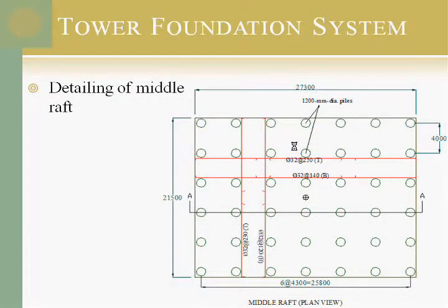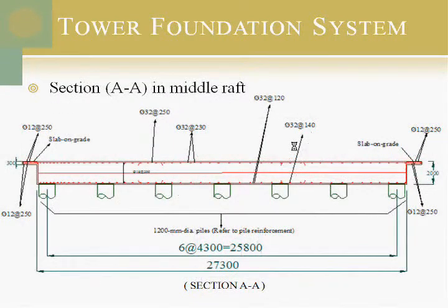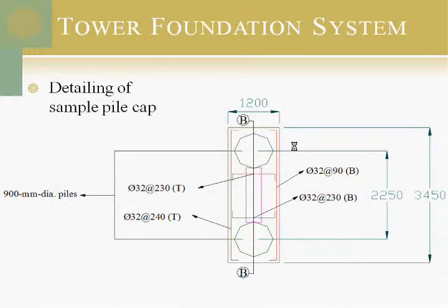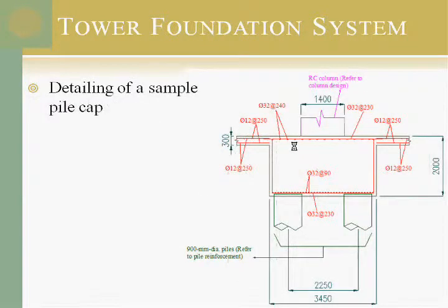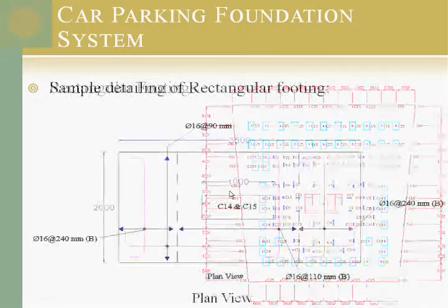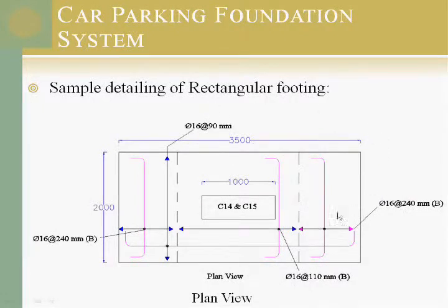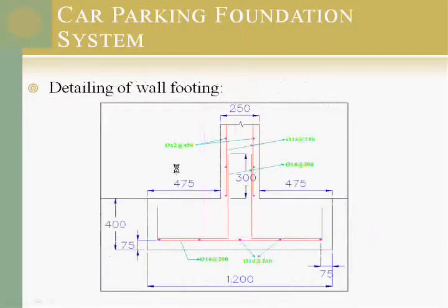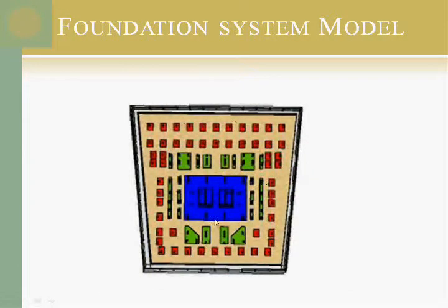This is a sample detailing of the middle raft for the shear walls, shown in section, and this is a sample detailing of the pile cap carrying one column, also in section. For the car parking foundation system, we used rectangular footings surrounding the car parking area. We also used a wall footing for the bearing wall using a simple method for designing the strip footing. A video was also prepared in the graduation project to model the foundation system in this structure.